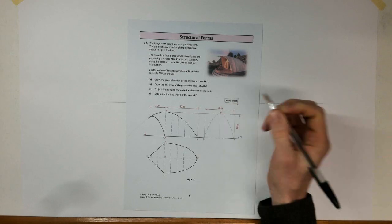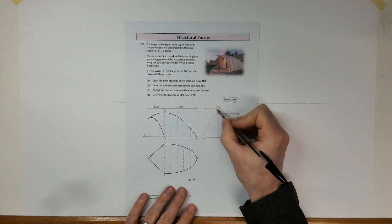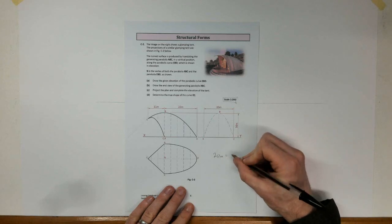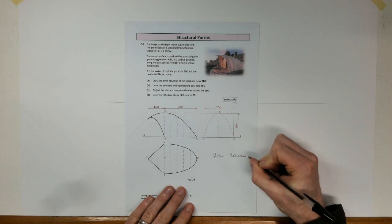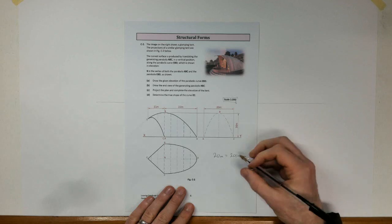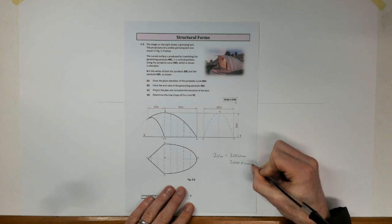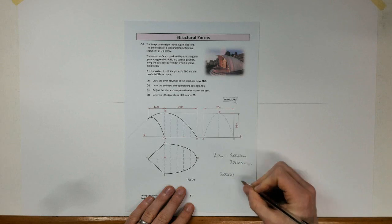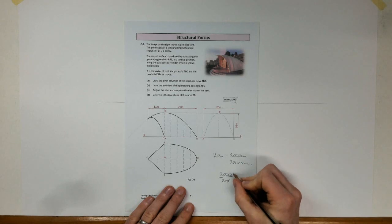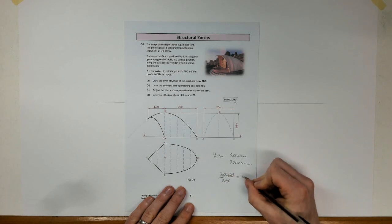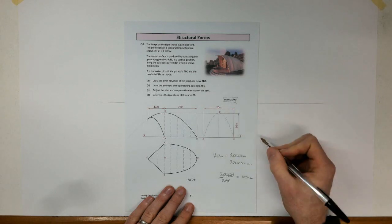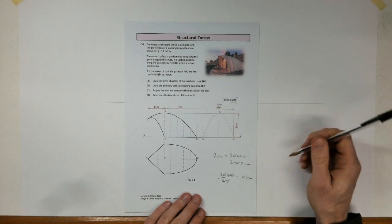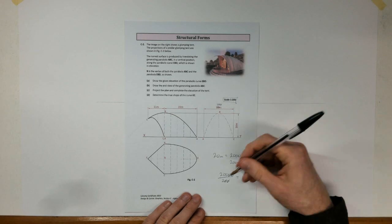Our scale is 1 to 200. Taking the 20-meter measurement: 20 meters equals 2000 centimeters, and in millimeters that's 20,000. Divided by 200 gives us 100 millimeters. So this length, when we measure it, is going to be 100 millimeters long. You can convert all those measurements quickly in your head: divide the meters by 2 and add a zero.